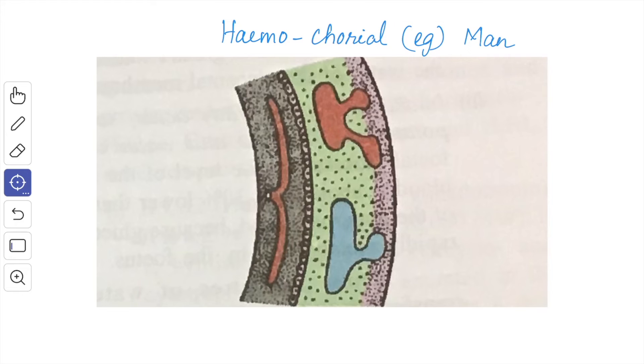The last variety is the hemoendothelial which is found in the rabbit. This is one step more advanced in the development than the human placenta. The trophoblastic cells of the chorion they degenerate to such an extent that only the endothelium of the fetal vessels intervenes between the maternal and the fetal blood.